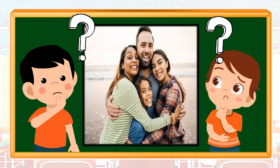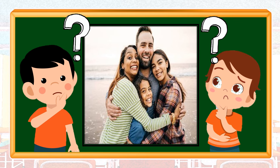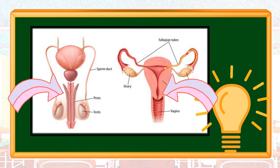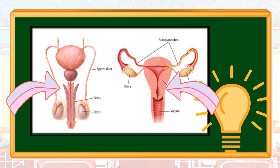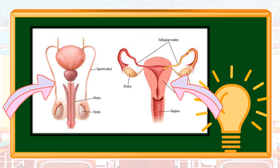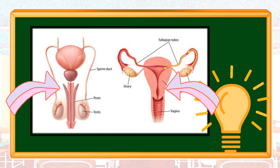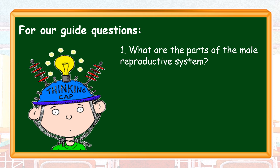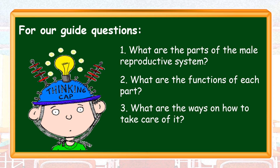Have you ever wondered how human beings differ from one another in terms of body structure? The reproductive organs in your body make a male and female differ from one another. The other organs such as your bones, muscles, skin, and other organs — both male and female have them. Number 1: What are the parts of the male reproductive system? Number 2: What are the functions of each part? And number 3: What are the ways on how to take care of it?